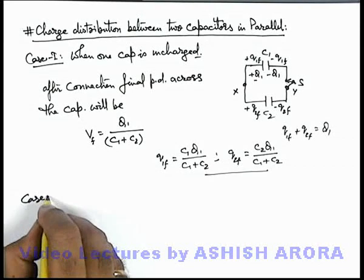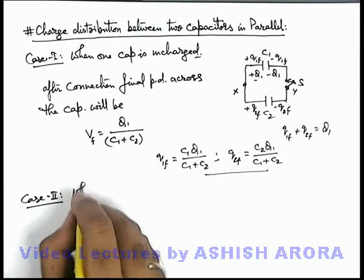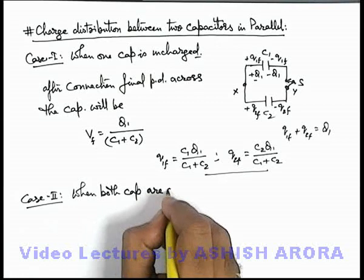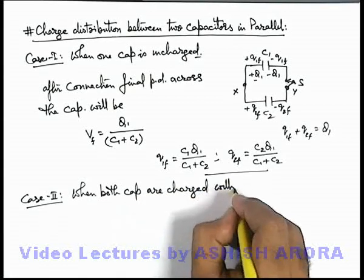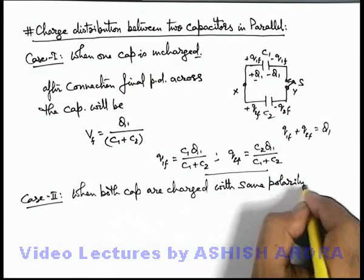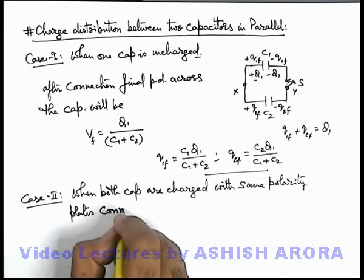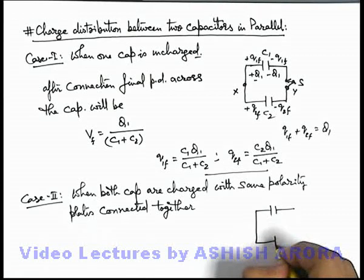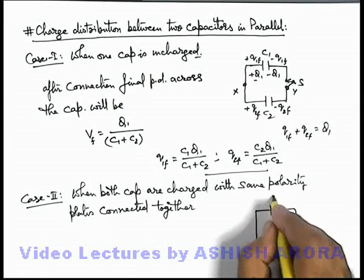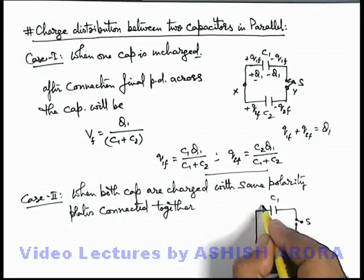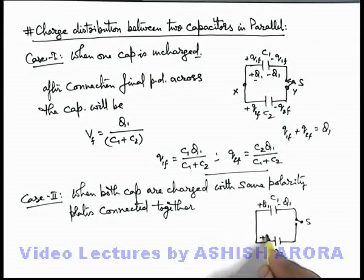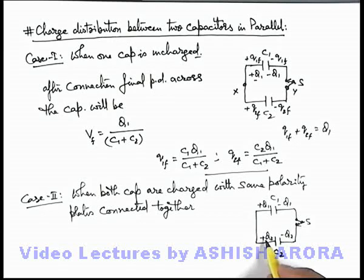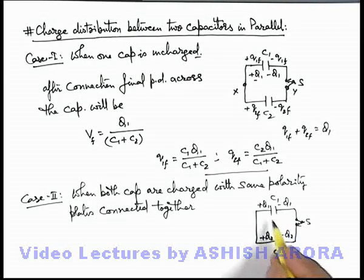Let's discuss Case 2, which will make the concept clearer: both capacitors are charged with same polarity plates connected together. Here C1 and C2 are connected in parallel via a switch, and initially both are charged — C1 with plus Q1 and minus Q1, and C2 with plus Q2 and minus Q2. When the switch is closed, the total charge on the left side is Q1 plus Q2, and on the right side it is negative of (Q1 plus Q2). The equivalent capacitance is C1 plus C2 and total charge is Q1 plus Q2.